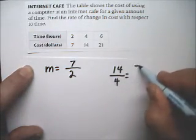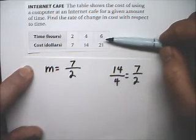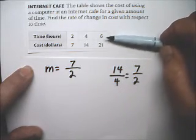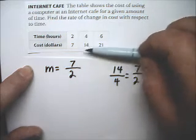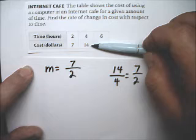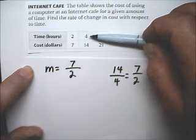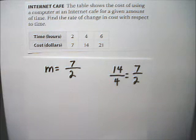And this would also reduce to 7 halves. So in a linear function like this, any change in y, which is the change in the bottom, divided by any of the corresponding changes in x's, which is the change in the top row.